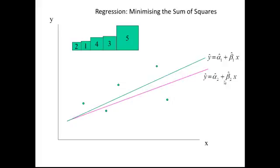Let's try a different line. Here the line is y-hat equals alpha-hat-2 plus beta-hat-2 times x, so we're trying a different constant and a different slope.